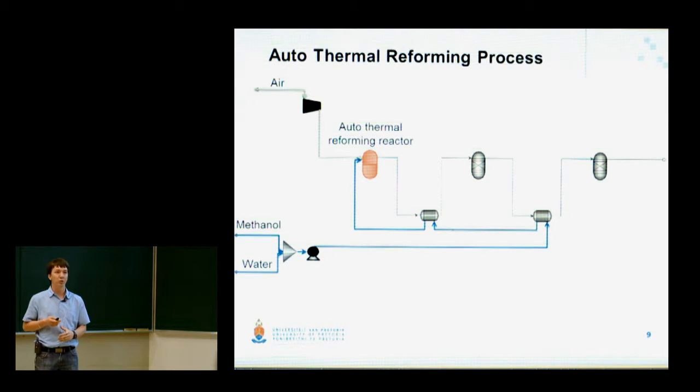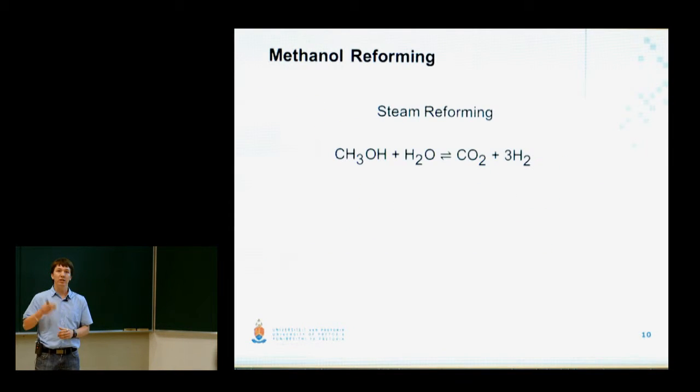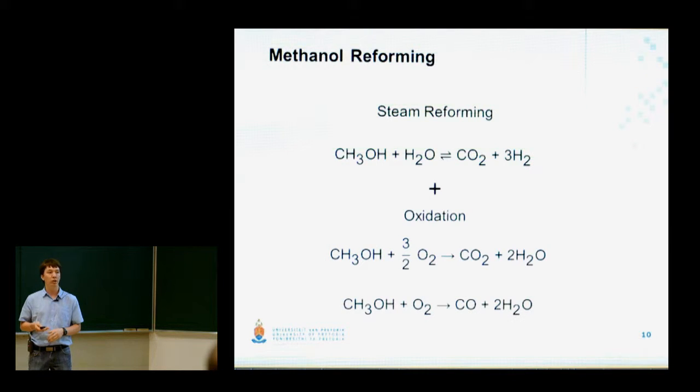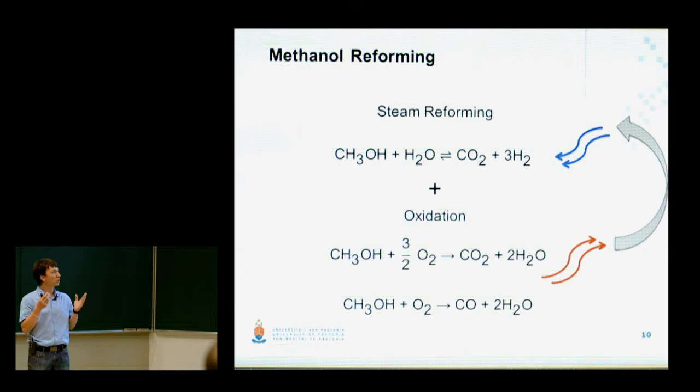Now let's consider the reactions which take place within this reactor. Firstly, we have the steam reforming reaction where methanol together with water is reacted to form carbon dioxide and some hydrogen. But due to the presence of oxygen within this reactor, we also have the oxidation reactions. The first is the complete oxidation reaction where methanol is oxidized to form carbon dioxide and water. The second is the incomplete combustion reaction where carbon monoxide together with water are formed. The steam reforming reaction is endothermic and absorbs heat, whereas the oxidation reactions are exothermic. The heat released from these reactions is used to drive the endothermic reaction forward, which is the main producer of hydrogen.